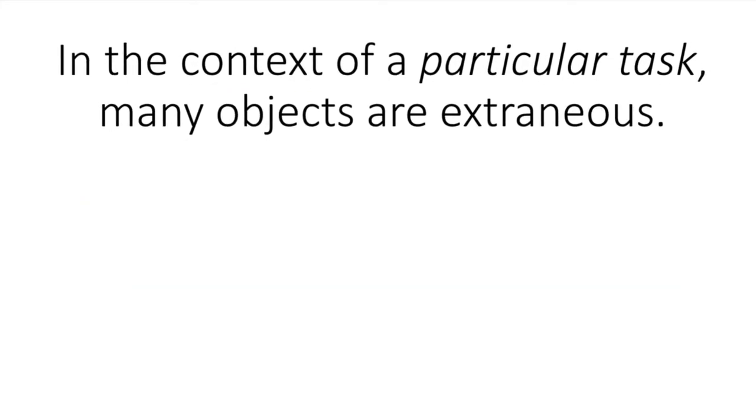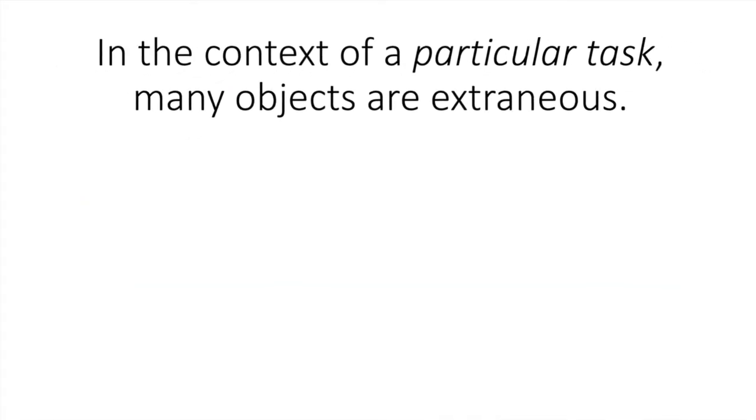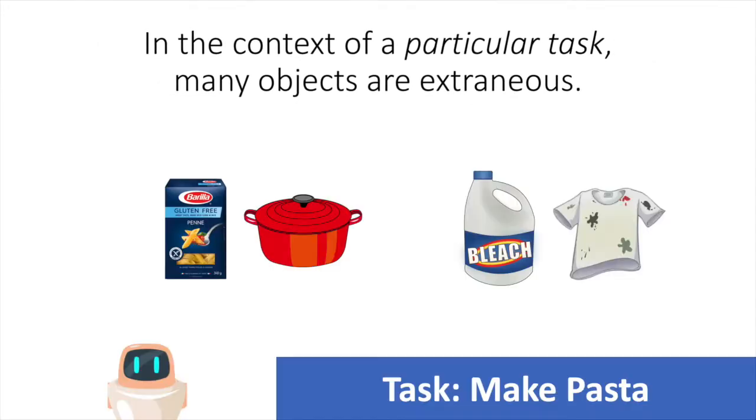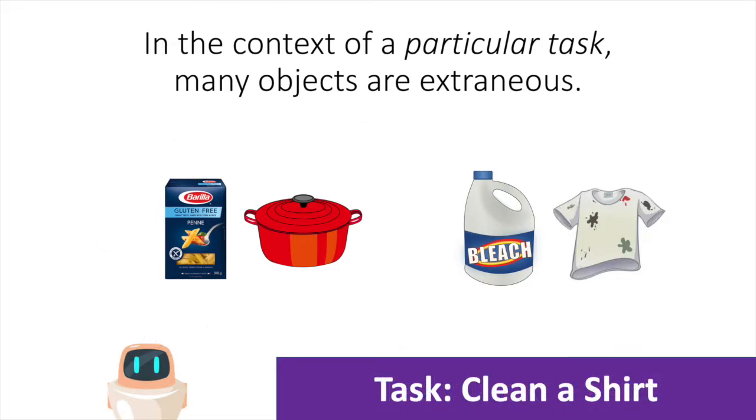But when given a particular task, many of these objects in the state become totally irrelevant to solving that task. When the goal is to make pasta, the robot should ignore the laundry detergent and the dirty shirt. But when the goal is to clean the shirt, the robot should ignore the pasta and pot. In general, for any particular initial state and goal, the robot should realize that many objects are extraneous in the context of the task and ignore them accordingly.